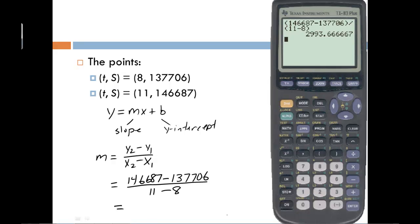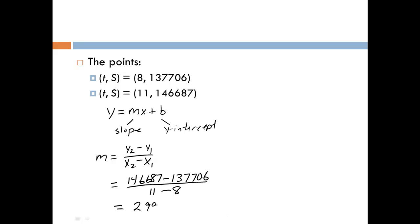We can compute that on our calculator, and we'll get 2,993.6 repeating. So we get 2,993.67 if we round it to two decimals.